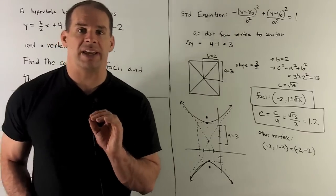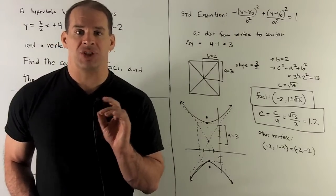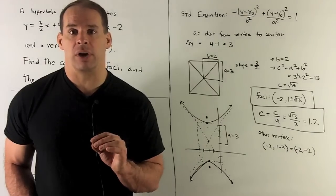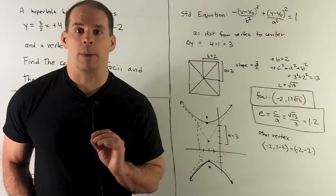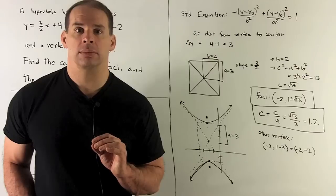Now, since I have c, I can also get the eccentricity. That's just c over a. So I have square root of 13 over 3, which is roughly 1.2.